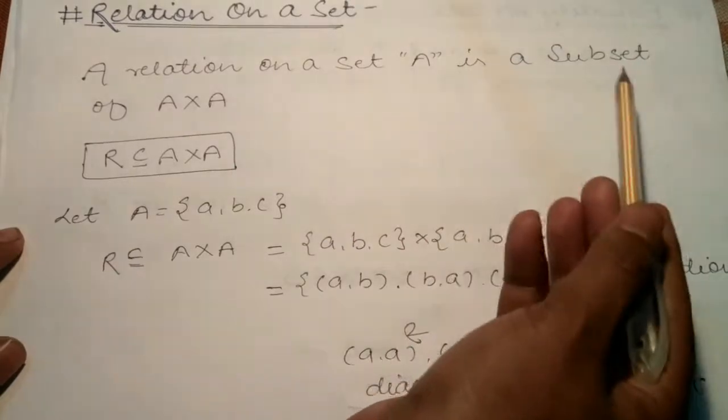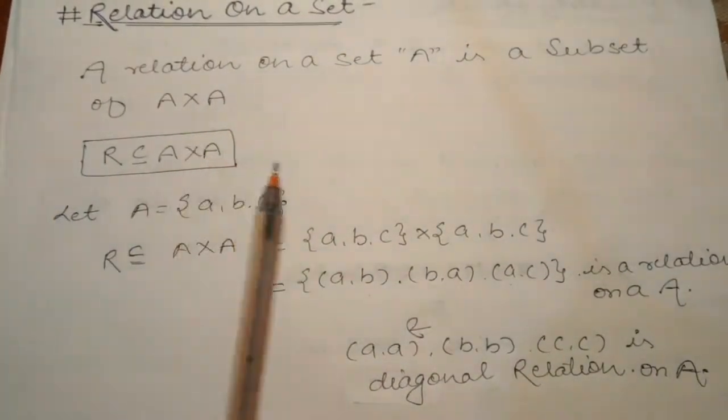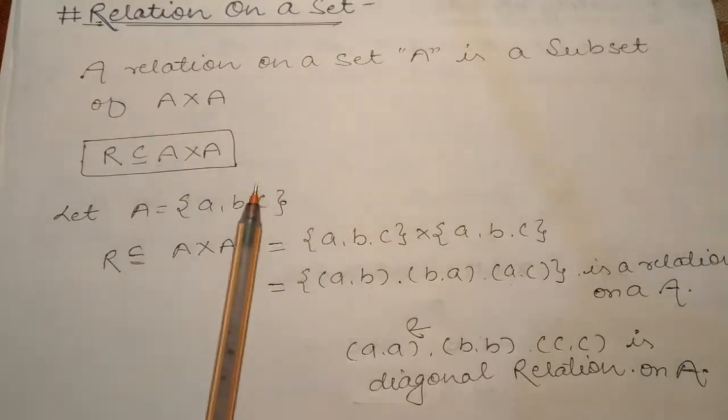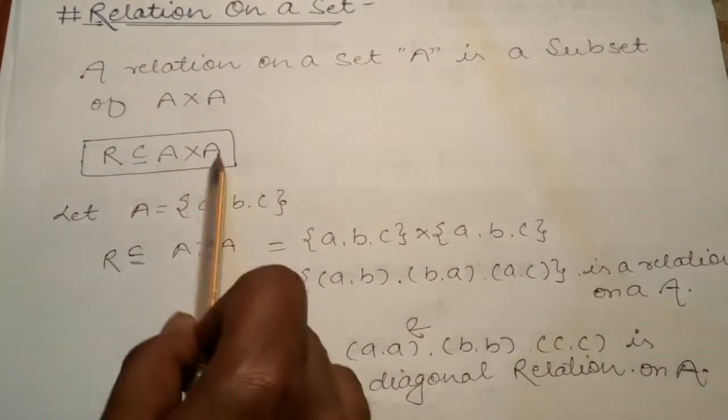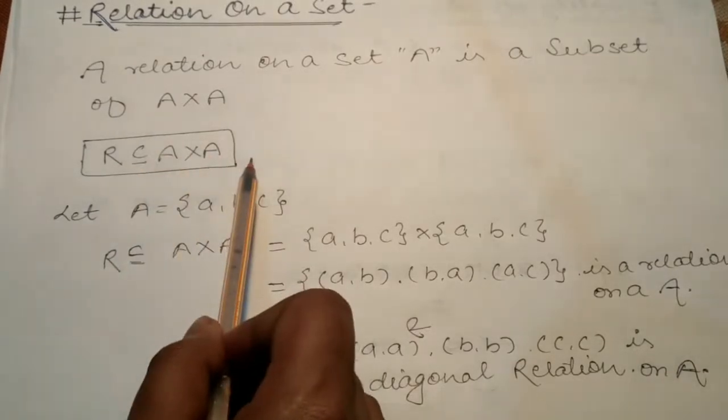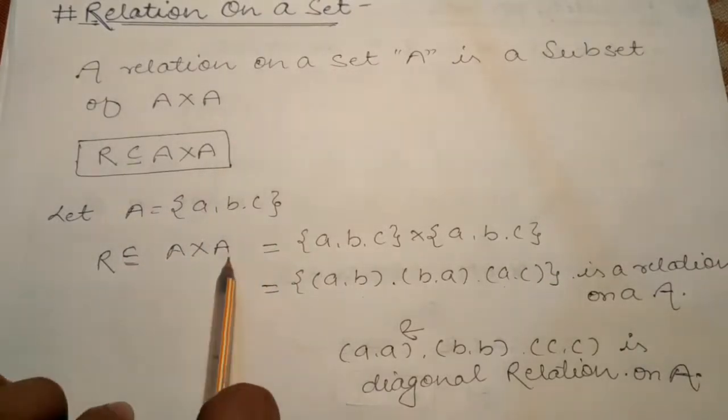A relation on a set A is a subset of A cross A. So if the relation is made on set A, then the relation is a subset of A cross A. Now I have set A cross A.